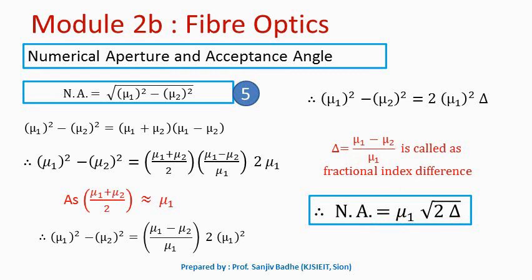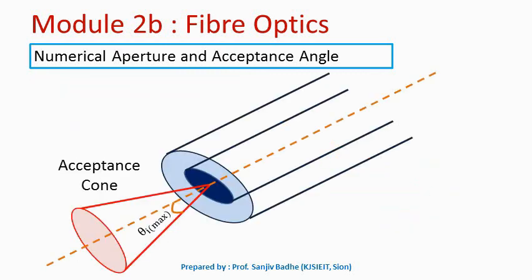If we visualize this acceptance angle in all directions, we get a cone called the acceptance cone. For internal reflection to occur, light rays must enter the fiber through this cone. Light rays entering from outside this cone will not undergo internal reflection, so only those light rays entering through the acceptance cone will undergo internal reflection and propagate through the fiber.